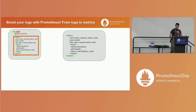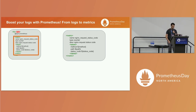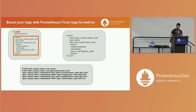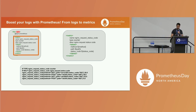We have the name of the metric, we say it's a counter-type metric, the description, and the labels. As we can see, between the dollar sign and braces, we have the method, path, and status code - the same labels from the previous slide. With this, we have the metric already created. It's very simple and kind of similar to Grok because we are using regex expressions. But FluentD has tons of other plugins because it has a great community and it is growing day by day.